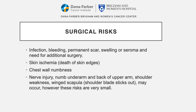Risks of mastectomy include infection, bleeding, permanent scar, swelling or seroma, and need for additional surgery. Skin ischemia, or death of the skin edges, chest wall numbness, nerve injury, numbness under the arm and the back of the upper arm, shoulder blade weakness, and winged scapula — when the shoulder blade sticks out — may occur. However, these risks are very small.